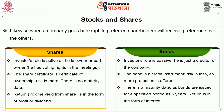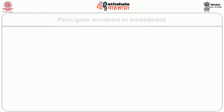The differences between bonds and shares are as follows. In shares, the investor's role is active as he is owner or part owner, but in bonds, the investor's role is passive — he is just a creditor of the company. The share certificate is a certificate of ownership; risk is more and there is no maturity date. A bond is a credit instrument; risk is less as more protection is offered. The return on shares is in the form of profit or dividend, whereas for bonds there is a maturity date as bonds are issued for a specified period such as 5 years, and the return is in the form of interest.